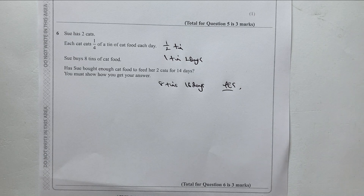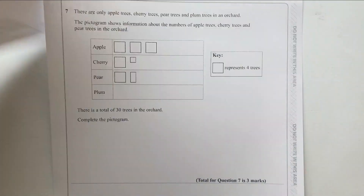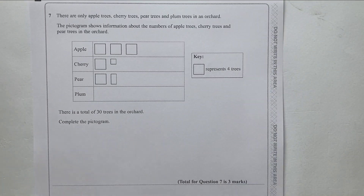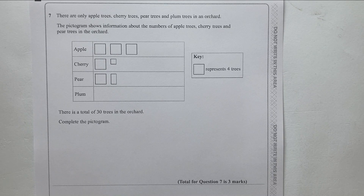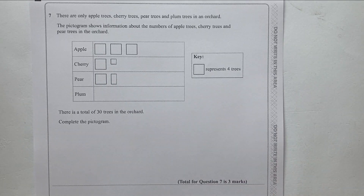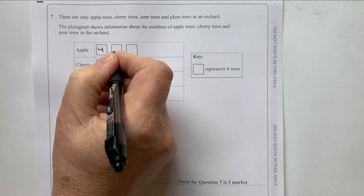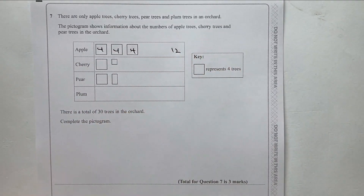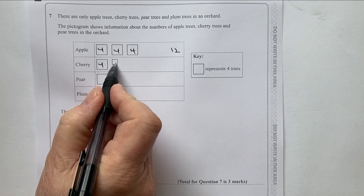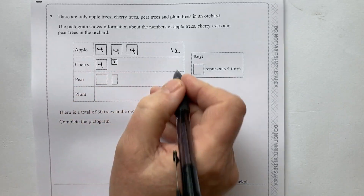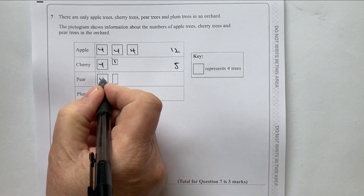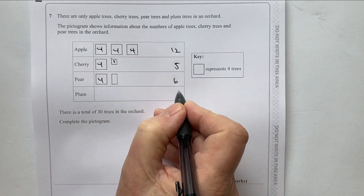Question seven deals with a pictogram — please download the paper and have a go yourself. There are apple, cherry, pear and plum trees in an orchard. One square represents four trees. Apple has three squares: 4, 4, 4 = 12 trees. Cherry has one square = 4, plus a quarter of four = 1, so five trees. Pear has one square plus half of four, so six trees.